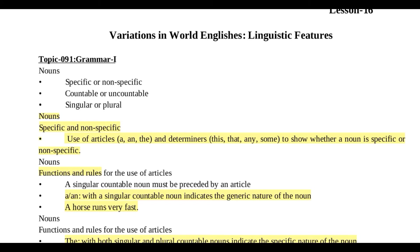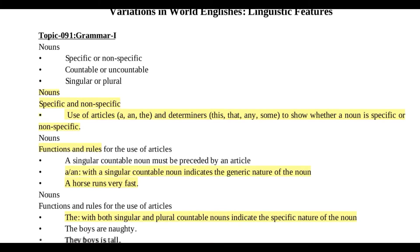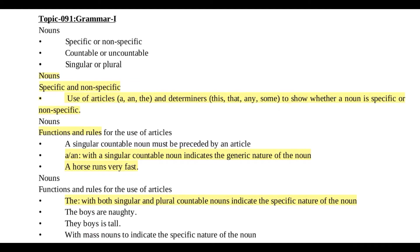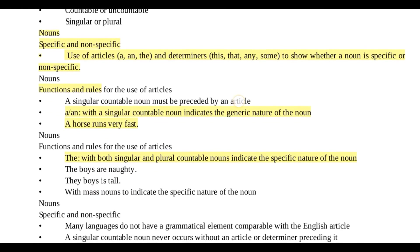'A' and 'the' with a singular countable noun indicates the generic nature of the noun — for example, 'A horse runs very fast.' Then 'the' used with both singular and plural countable nouns indicates the specific nature of the noun. This is the specific nature of the noun — you need to highlight this here.